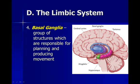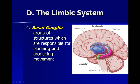The basal ganglia are an important set of structures responsible for planning and producing movement. When we talk about Parkinson's disease and drugs to treat it, we'll be focused on the basal ganglia, because this is the part of the brain affected by Parkinson's disease.